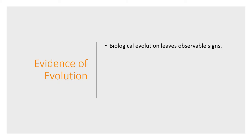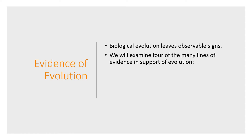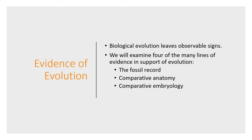Now we'll talk about the evidence for evolution. Biological evolution leaves a lot of observable signs we can use to back up this theory. There are four main lines of evidence: the fossil record, comparative anatomy, comparative embryology, and molecular biology.